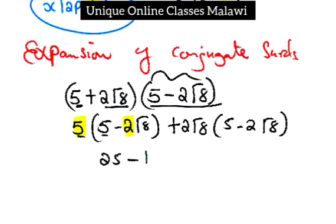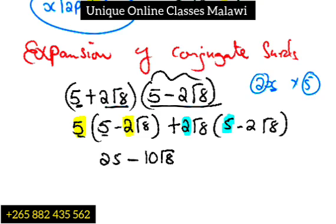We have 5 times 5, which is 25. Then we have minus 10 root 8 and plus 10 root 8. Then we have minus, these are all numbers, and we have 10 root 8 similar to this one. Then we have negative, that represents negative. Then we have 4 times root 8 times root 8.